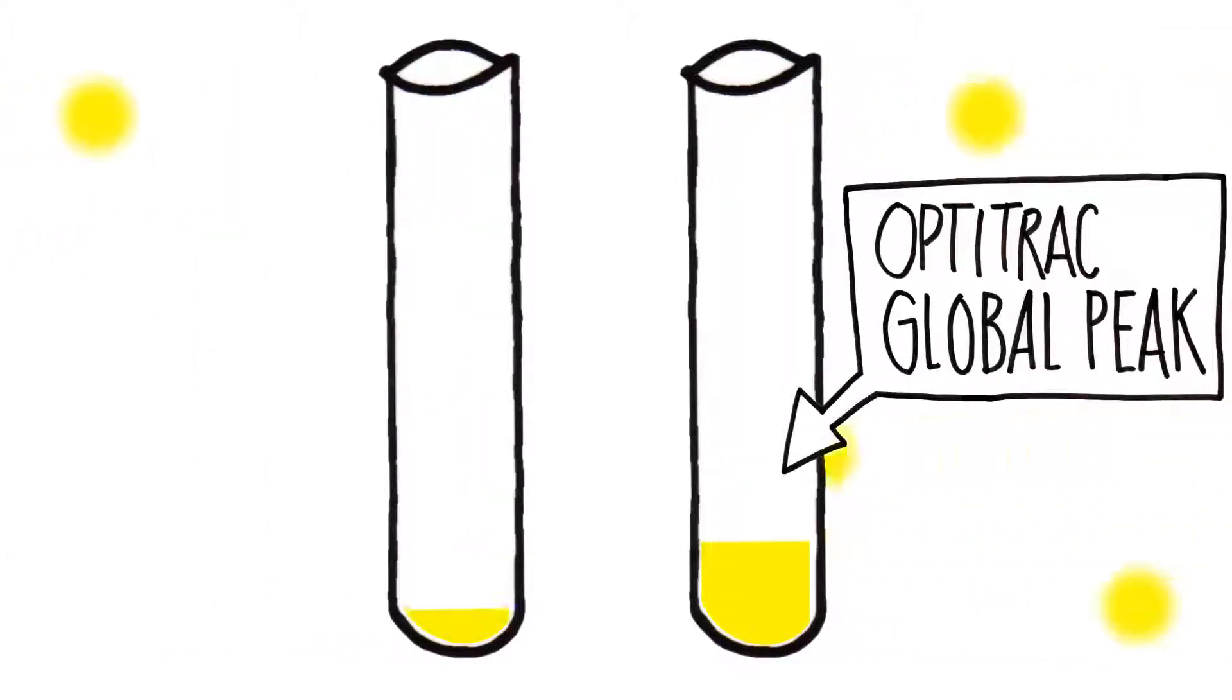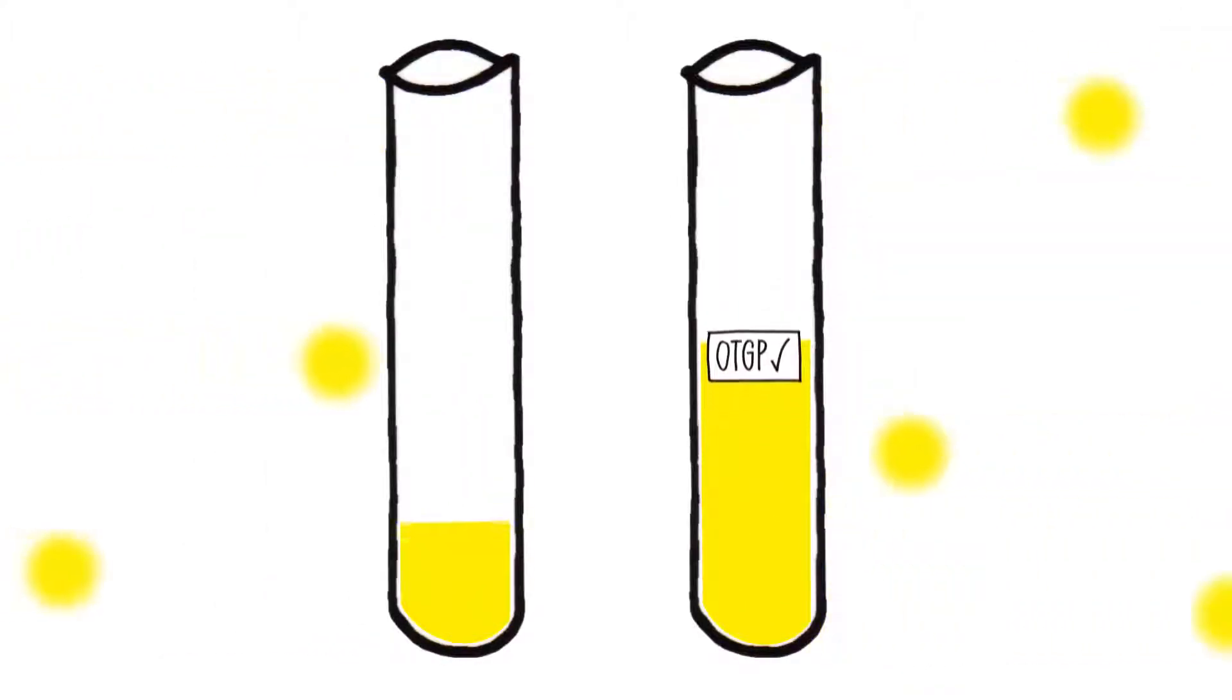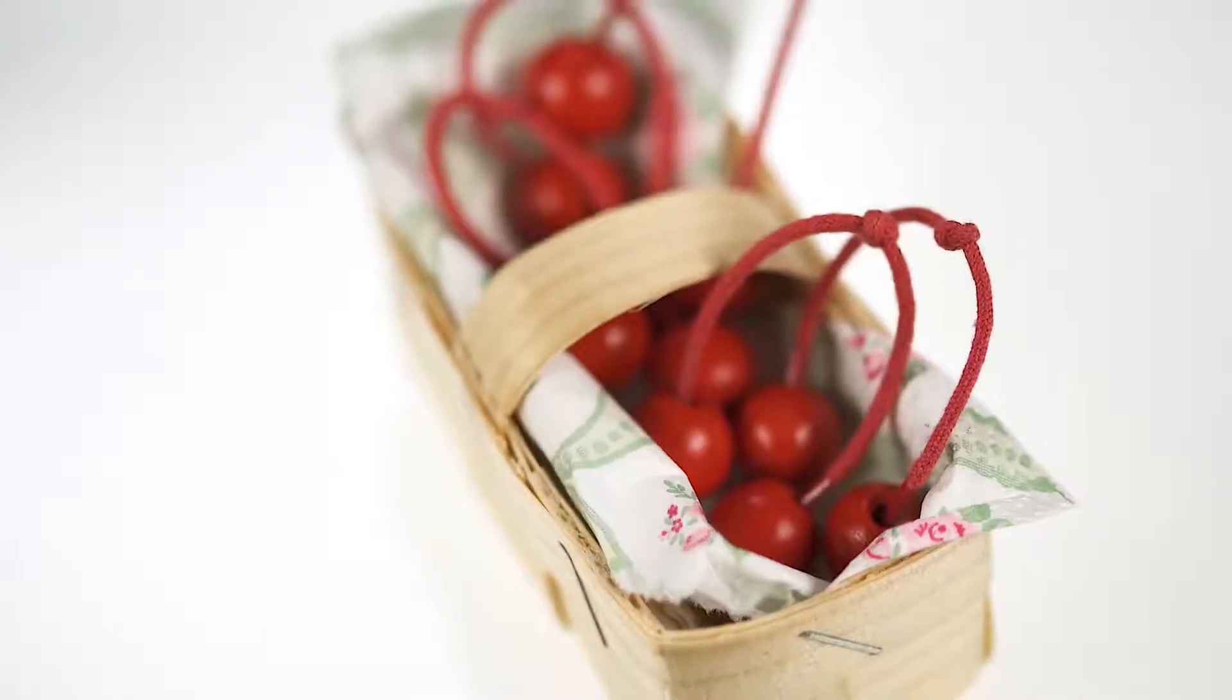With OptiTrack Global Peak, you get maximum solar yields, even in partially shaded plants. And all this without adding any extra equipment. And Peter's cherry tree is no longer in danger of being cut down.